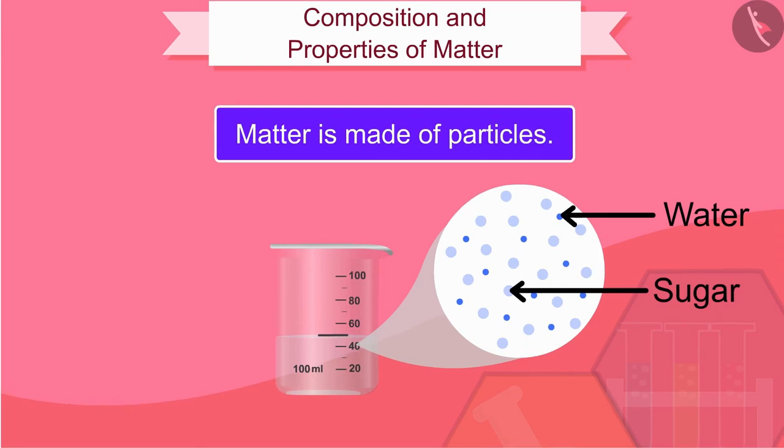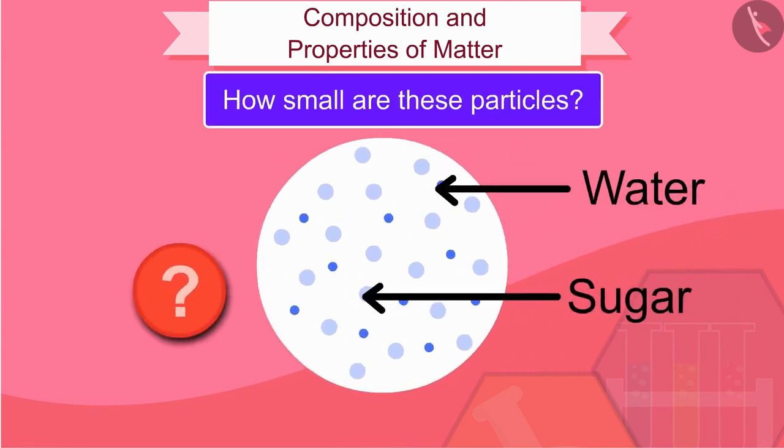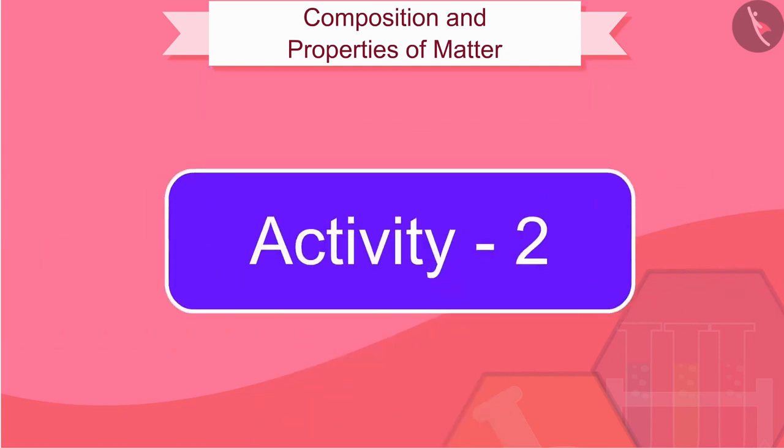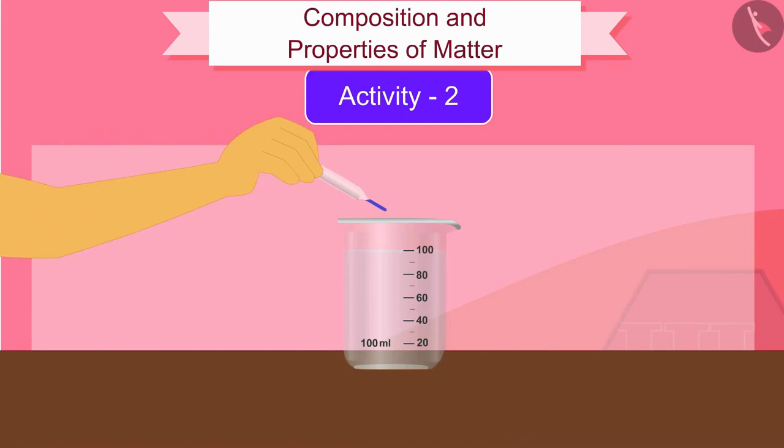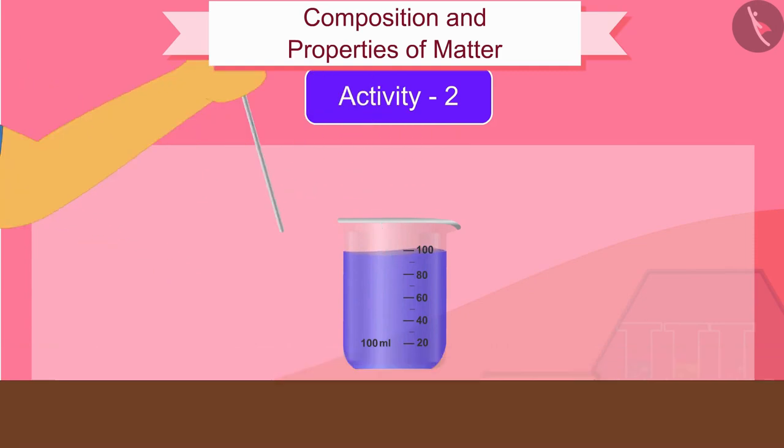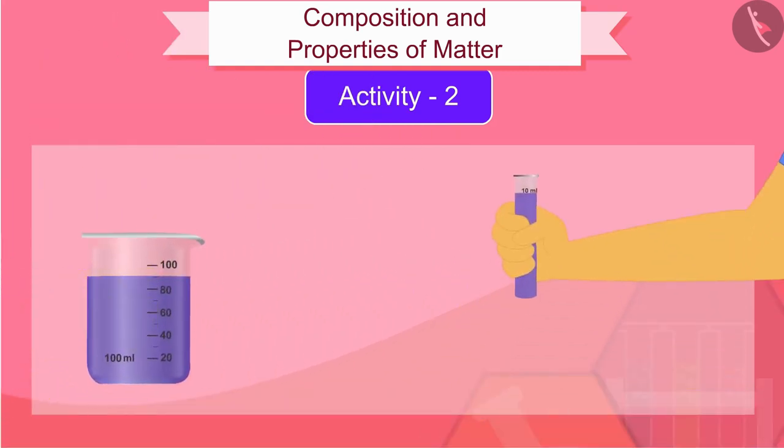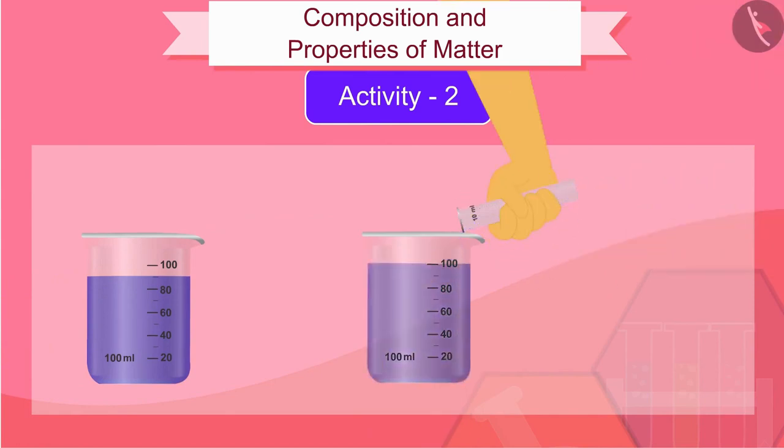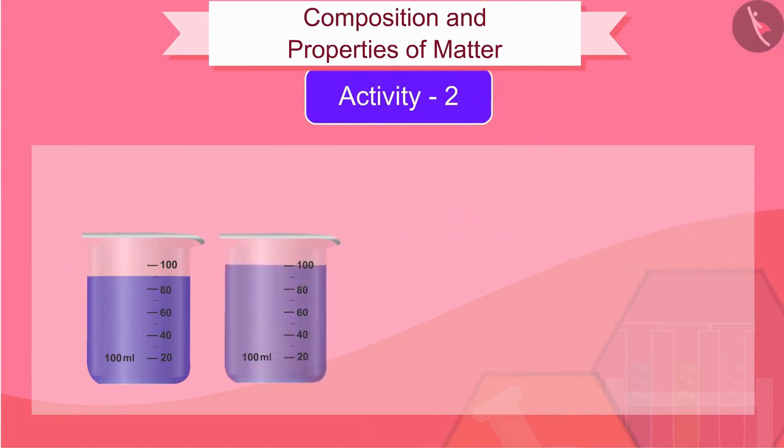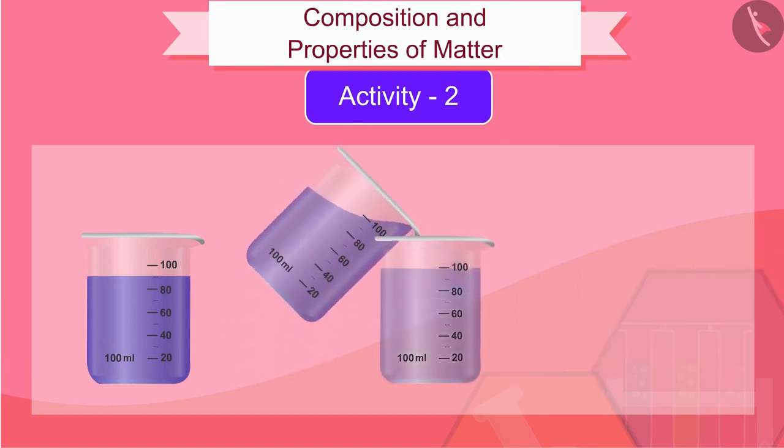We have come to know that matter is made of particles. But how small are these particles? Let us try to find this out by an activity. Dissolve five drops of ink in 100 ml of water. Take out about 10 ml of this solution and mix it in 90 ml of water. Similarly, keep this solution diluted for five to eight times.